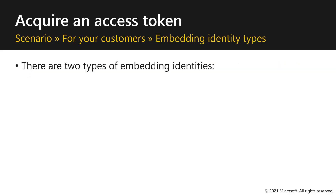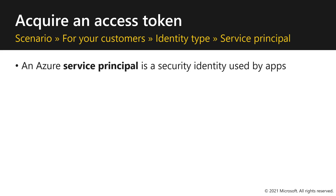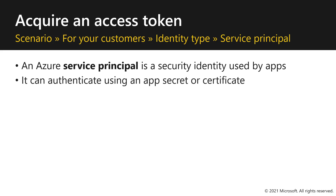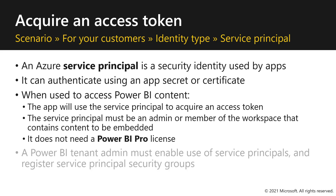Next, let's talk about the two types of embedding identities: Service Principal and Master User. An Azure Service Principal is a security identity used by apps. It can authenticate using an app secret or a certificate. When used to access Power BI content, the app uses the Service Principal to acquire an access token. The Service Principal must be an admin or member of the workspace containing the content to be embedded, and does not need a Power BI Pro license. A Power BI tenant admin must first enable the use of Service Principals and register Service Principal security groups.